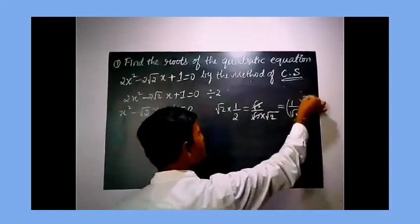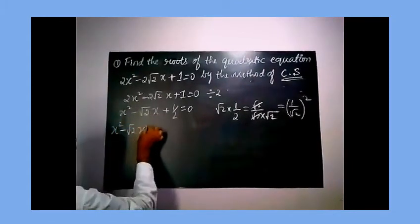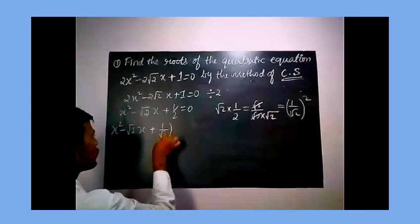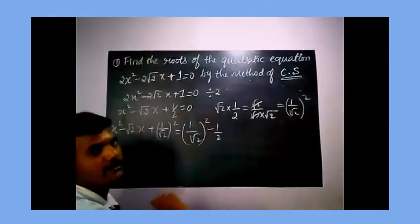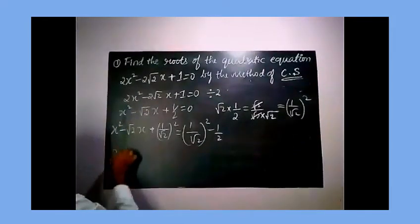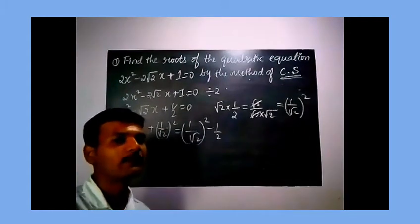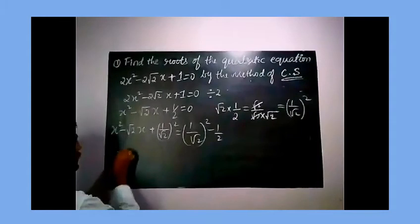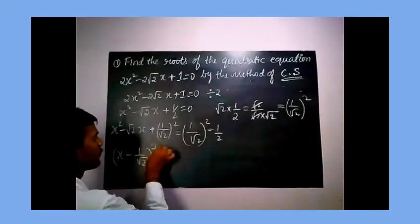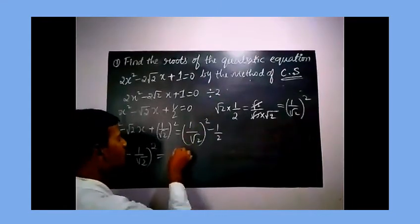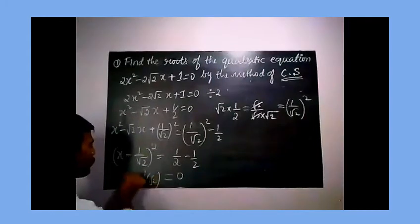By squaring 1/√2 and adding it to both sides, we get: x squared minus √2 x plus (1/√2)² equals (1/√2)² minus 1/2. The 1/2 comes to the right side as minus 1/2. The left-hand side is in the form (a minus b)² — applying the identity: (x minus 1/√2)² equals (1/√2)² minus 1/2, which is 1/2 minus 1/2 equals 0.